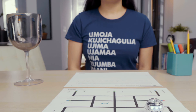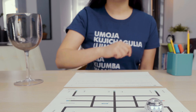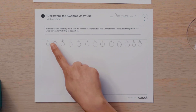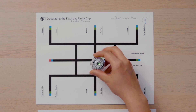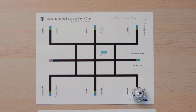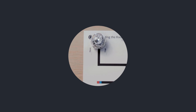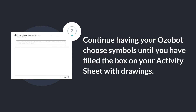Here's an example. I placed my Ozobot on the random chooser at Start and it landed on the crops. I will use my drawing from the symbols page to create a pattern, like a border along the top of my rectangle. When I'm finished with my first pattern, I will put my Ozobot back on Start facing a different direction. I'll use my drawing for the next chosen symbol to create another pattern in the rectangle. Can you create a pattern using the drawing for the symbol your Ozobot lands on? Continue having your Ozobot choose symbols until you have filled the box on your activity sheet with drawings.